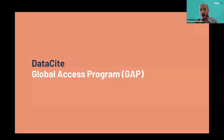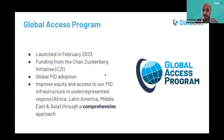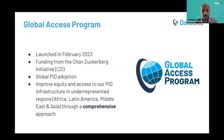Our core initiative to highlight today is the Global Access Program. We launched the program this year in February 2023 through a grant from the Chan Zuckerberg Initiative. Our aim is to increase the global adoption of persistent identifiers and improve equity and access to our PID infrastructure, especially in underrepresented regions. DataCite has taken a comprehensive approach with this program, which I'll highlight in the following slides.